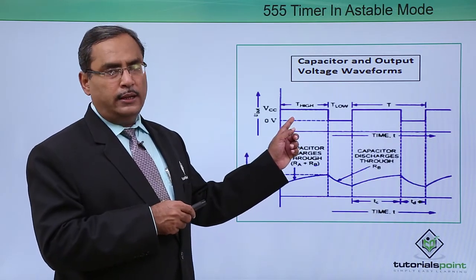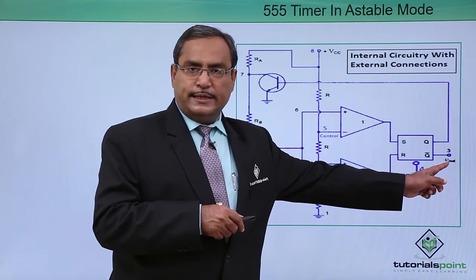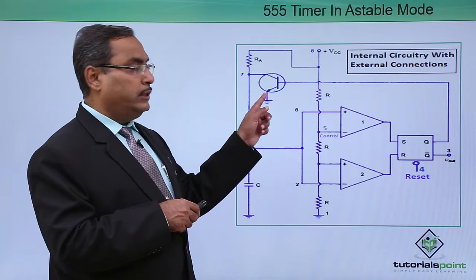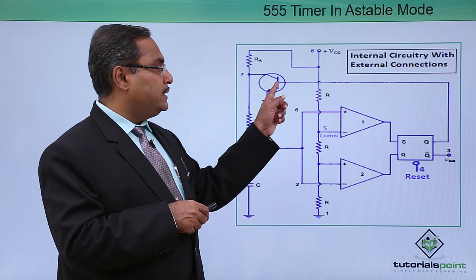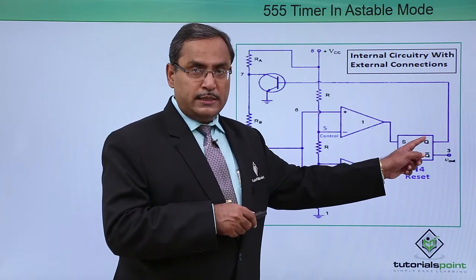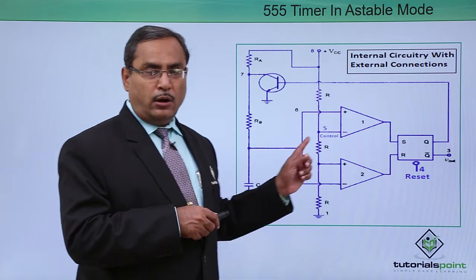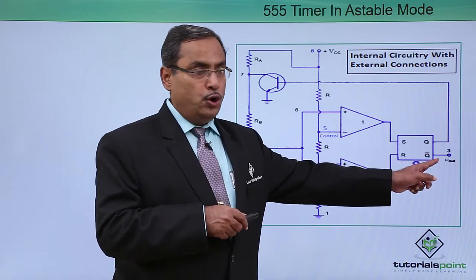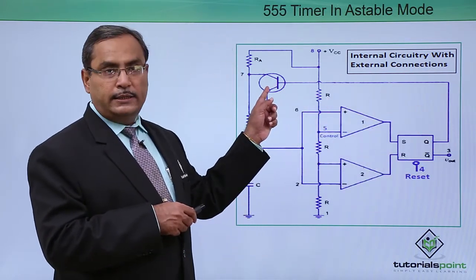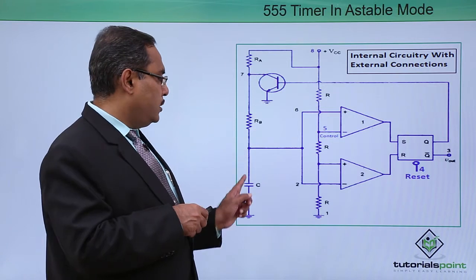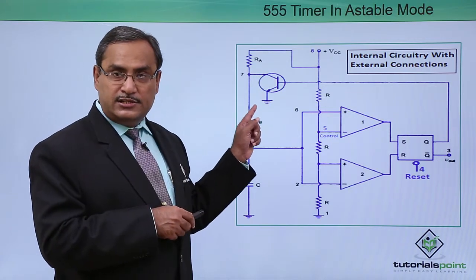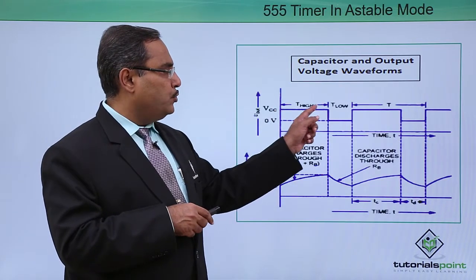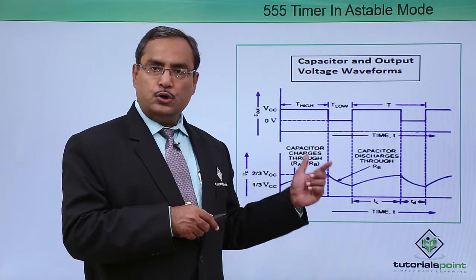Accordingly, we get the respective output from Q-bar. The capacitor charges when the transistor is off — 0 volts at the base — so Q-bar is high, meaning when the capacitor is charging the output is high. When the capacitor is discharging, Q goes high, turning the transistor on, and the capacitor discharges through RB. So when charging, output is high; when discharging, output is low.